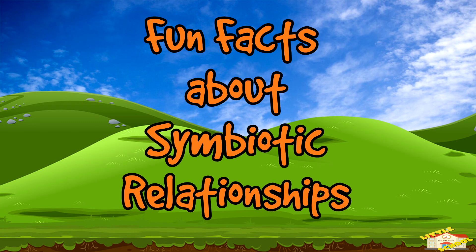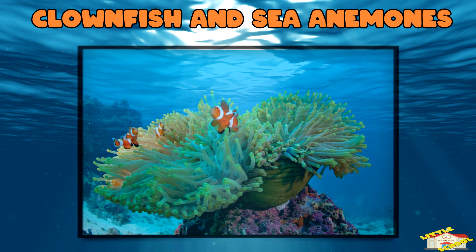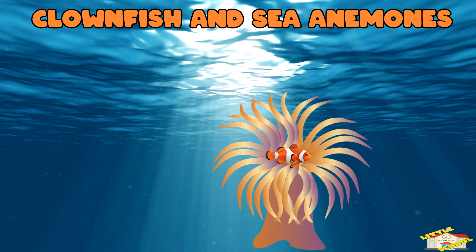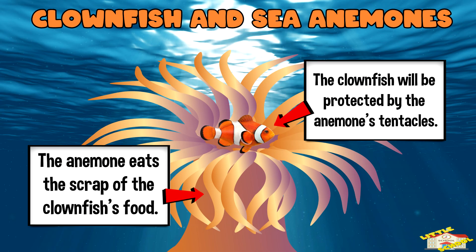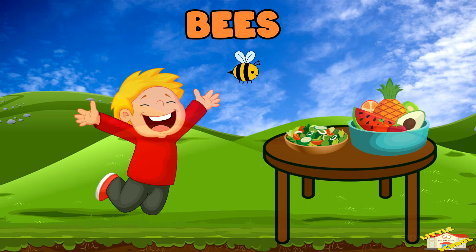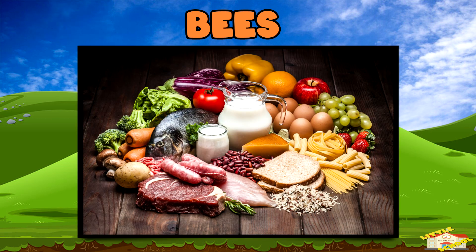Now here are fun facts about symbiotic relationships. Clownfish and sea anemones: the clownfish gets a safe home in the anemone's tentacles, and the anemone eats scraps of the clownfish's food. Bees: without bees, we wouldn't have many of the fruits and vegetables we eat. Bees help grow about one-third of the food we eat.